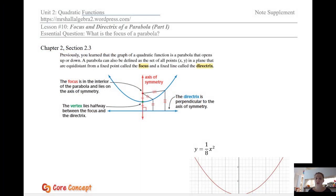Previously, you learned that the graph of a quadratic function is a parabola that opens up or down. A parabola can also be defined as the set of all points x and y in a plane that are equidistant from a fixed point called the focus and a fixed line called the directrix. This is a new way to describe a parabola. You can describe a parabola by its directrix and focus.